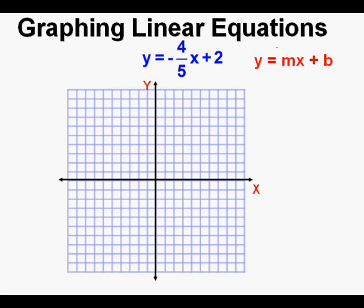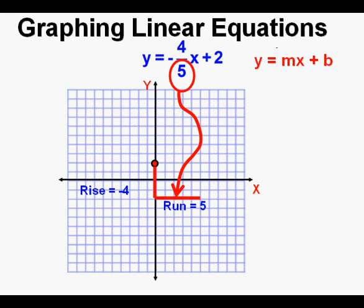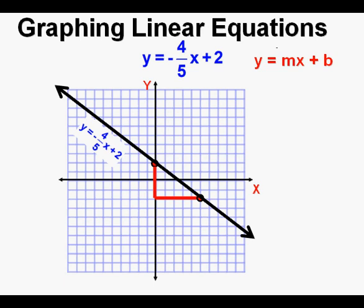Let's look at this function in slope-intercept form: y equals negative 4 fifths x plus 2. The first thing we notice is the y-intercept b at 2, so we place the first point at y equals 2 along the y-axis. Now we take the rise from the numerator at negative 4 — negative 4 means down 4 — and go down 4 from our initial point. Then we take the denominator of 5 and run to the right 5 units. We mark our second point at the end of the run and draw a line through the two points. This is the graph of y equals negative 4 fifths x plus 2.